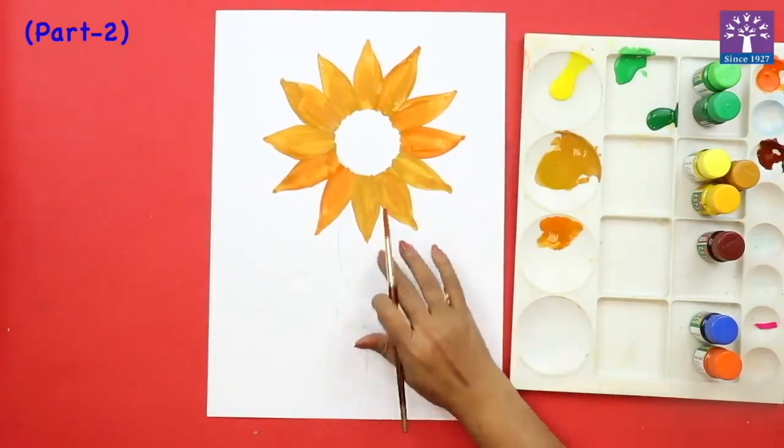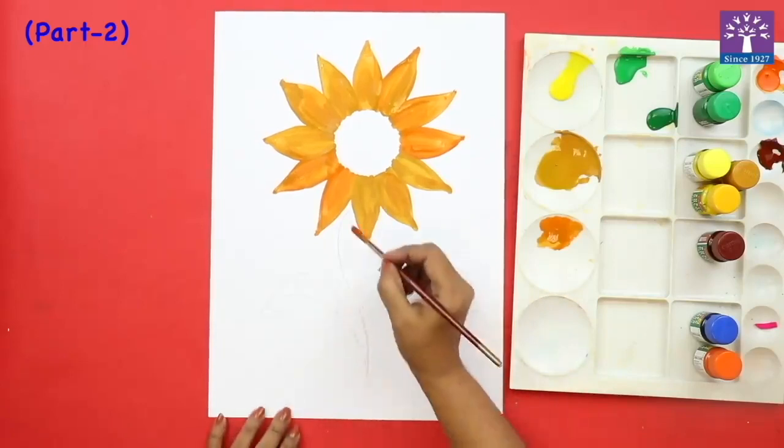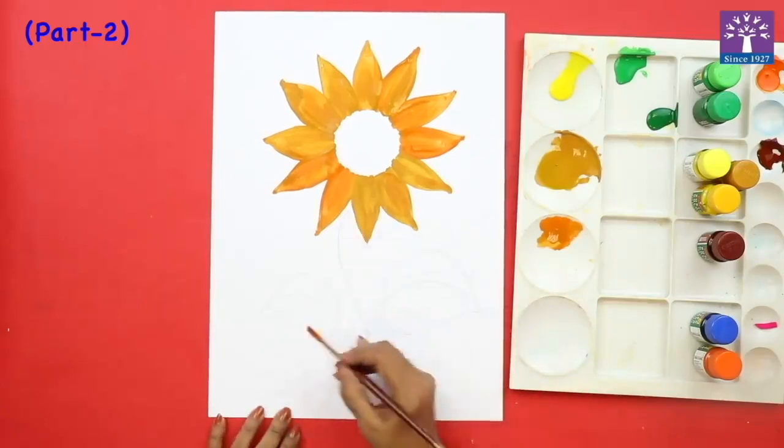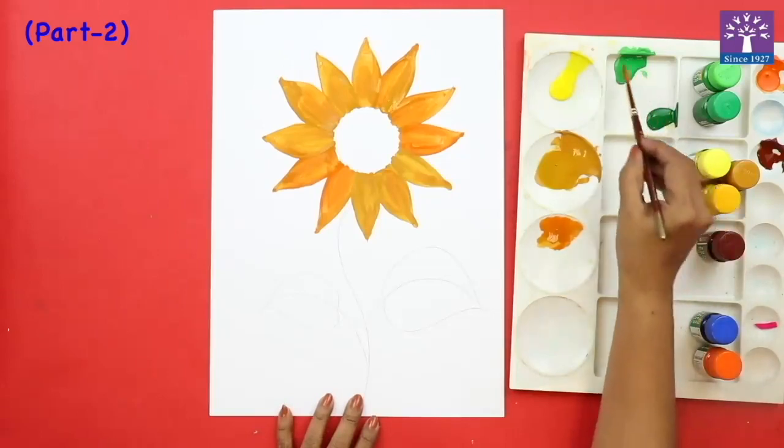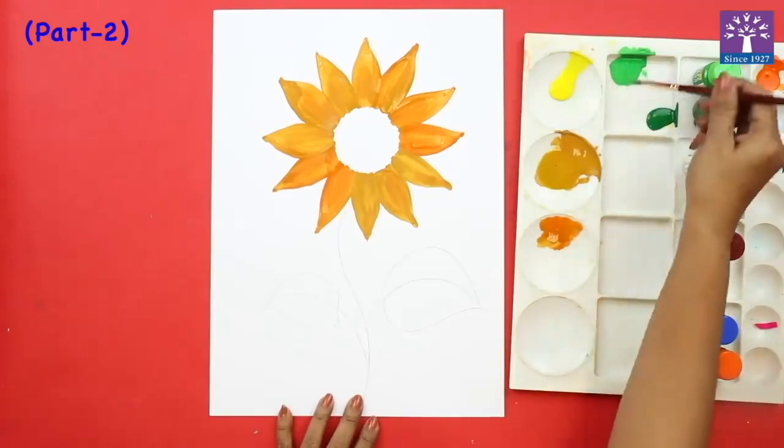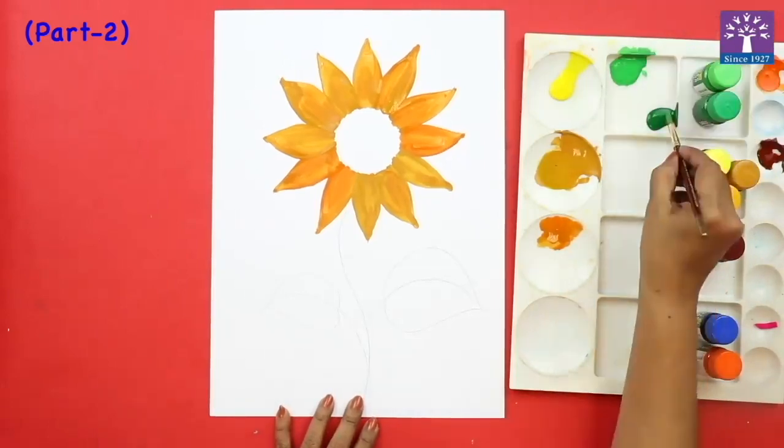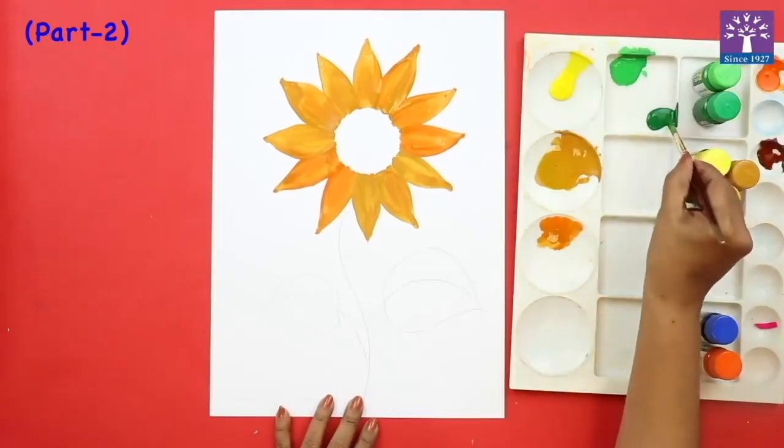We will allow this to dry. In the meantime, we will paint the stems and the leaves at the center of the flower. So for the stems, I have taken light green and dark green. I am loading my brush, dipping my brush in light green color. I am also dipping it in the dark green.